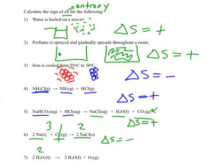Lastly, here I have two particles also becoming three. And in addition, one of them is making a gas. So delta S is going to be positive.